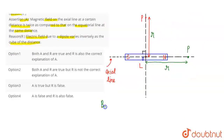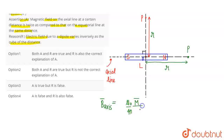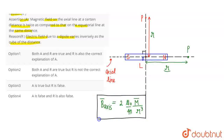If I write the magnetic field on the axis at point P, the direct formula is: B axial = μ₀/4π × M/r³ × 2. Here capital M is the magnetic moment, r is the distance from the center of the magnet to the point where you are writing the magnetic field. From the derivation, a factor of 2 appears, so B axial = 2 × (μ₀/4π) × M/r³.